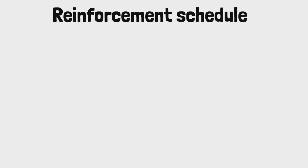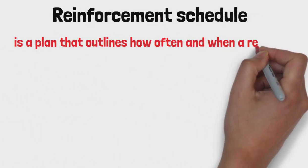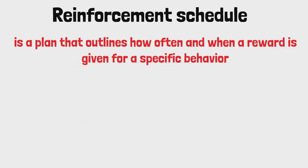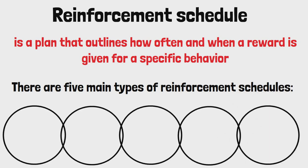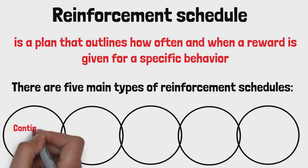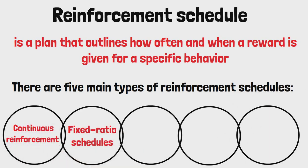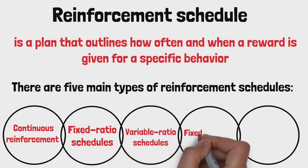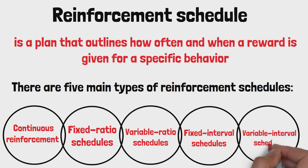A reinforcement schedule is a plan that outlines how often and when a reward is given for a specific behavior. There are five main types of reinforcement schedules: continuous reinforcement, fixed ratio schedules, variable ratio schedules, fixed interval schedules, and variable interval schedules. Let's explore each one.